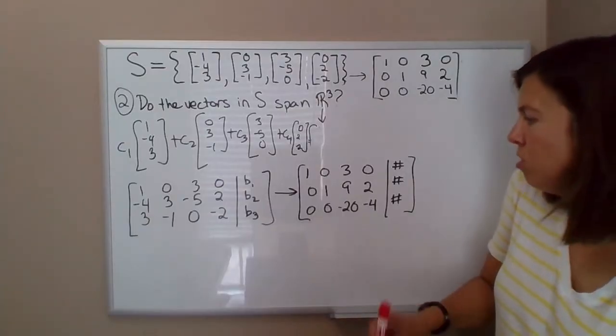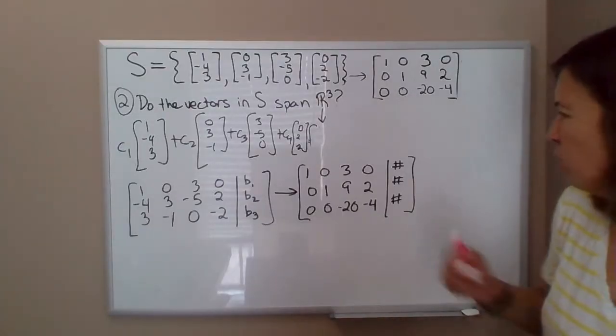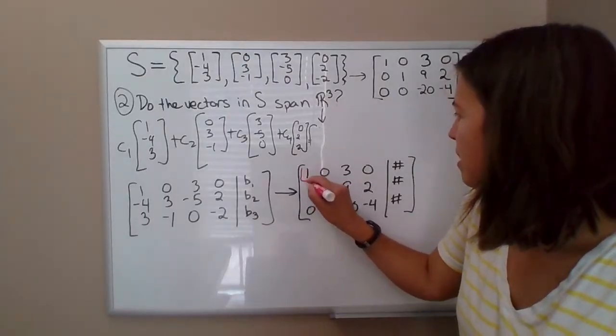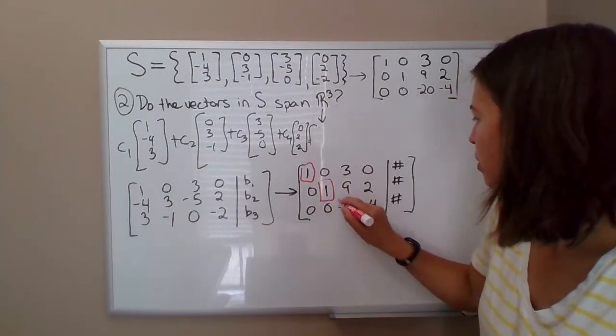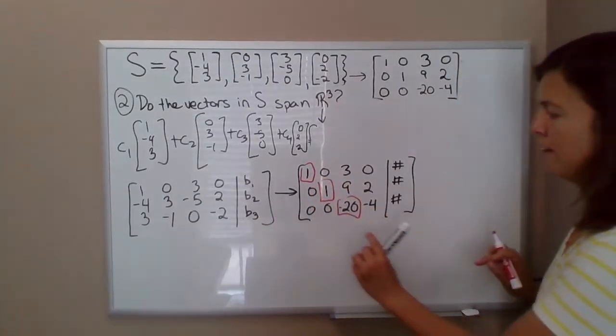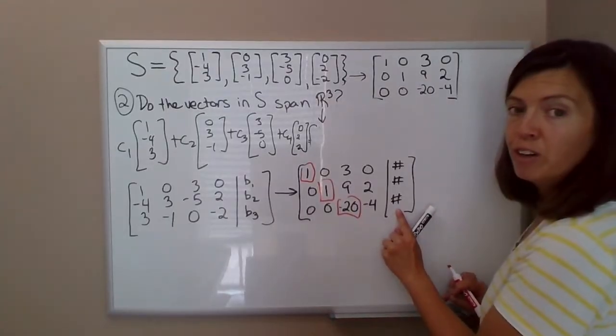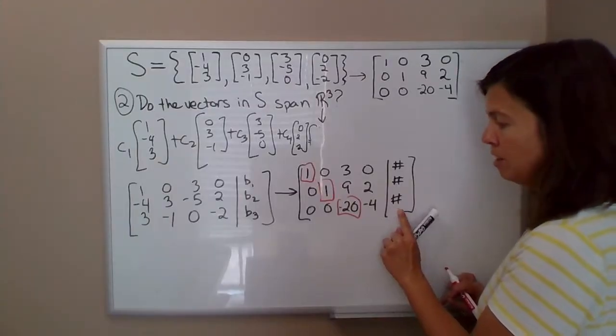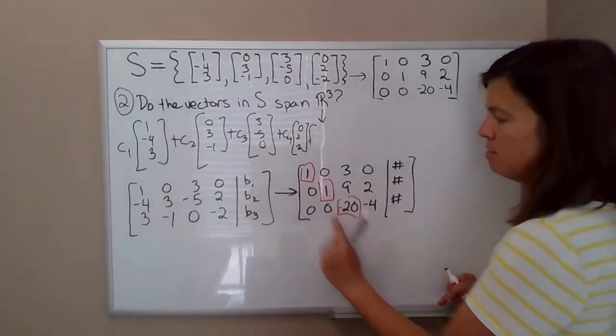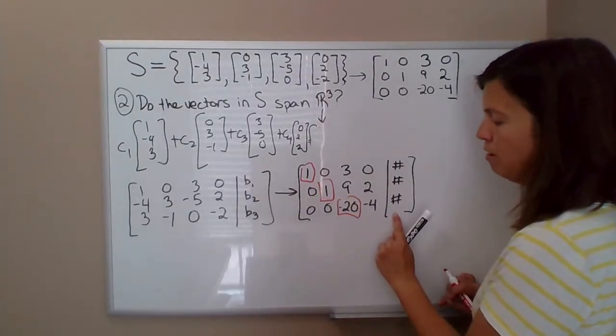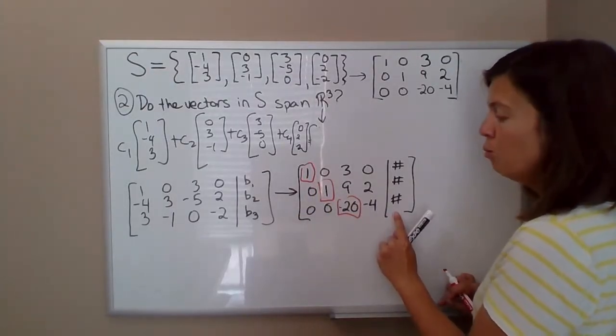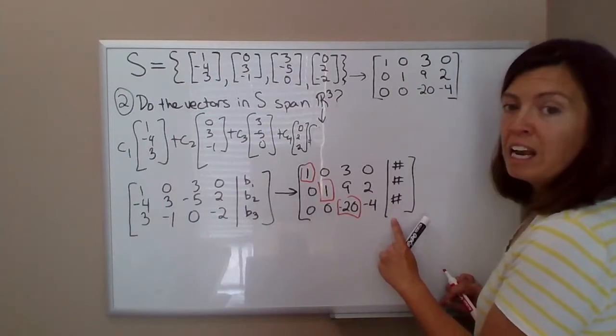So we're wondering, is this system consistent or inconsistent? Well, since you have a pivot in every row, then there's no way that you're going to have a row with a pivot way over here in the constant column. It can't happen, because already we see we've got a pivot in every row. So no way are you going to end up with a pivot over here, which means there's no way you're going to end up with an inconsistent system.